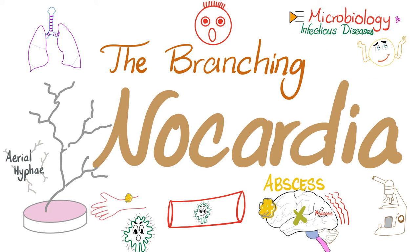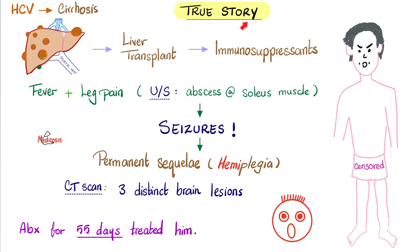True story, mind you: a patient had hepatitis C virus. After years and years, he developed cirrhosis of the liver. Since his liver was now toast, he went for a liver transplant. To protect him from attacking the new liver — because the new liver is foreign to his body, immunologically speaking — the doctors prescribed immunosuppressants.